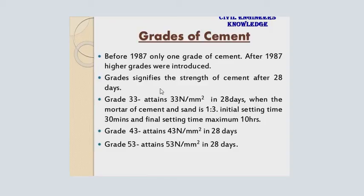We need to use a concrete cube to test the grade. The results are measured in MPa — newtons per mm². Grade 33 cement attains 33 newton per mm² compressive strength. This 33 newton per mm² is the compression value used to define Grade 33.